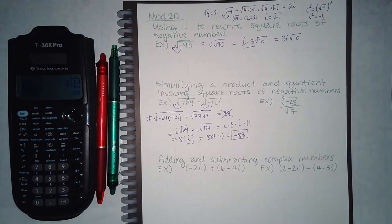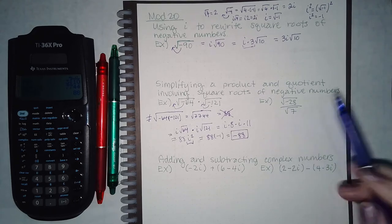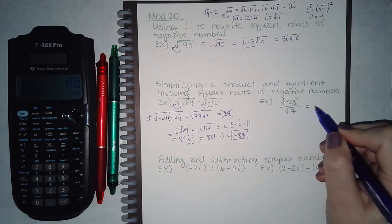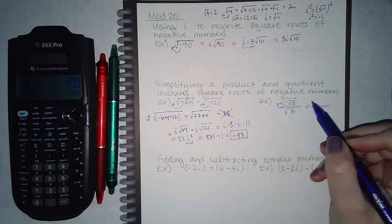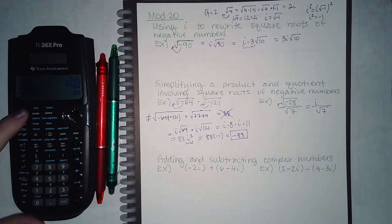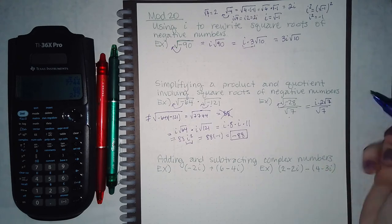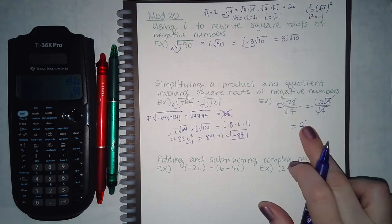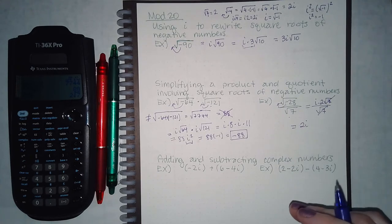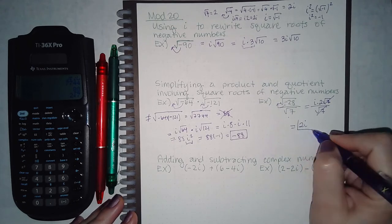For the next example, this is a complex number but this one is not — it's the square root of a positive. The square root of 7 cannot reduce. Take the negative out as an i, and the square root of 28 simplifies to 2 square root of 7. These two square root of 7 terms will reduce, and i times 2 gives 2i. Since there's no i squared here, it does not become negative 1.